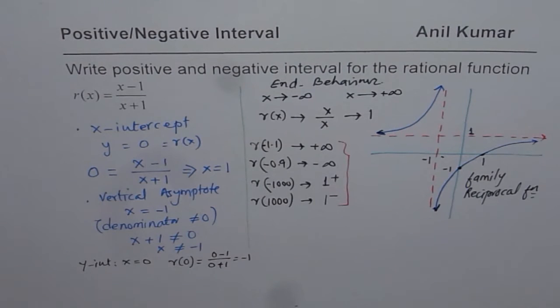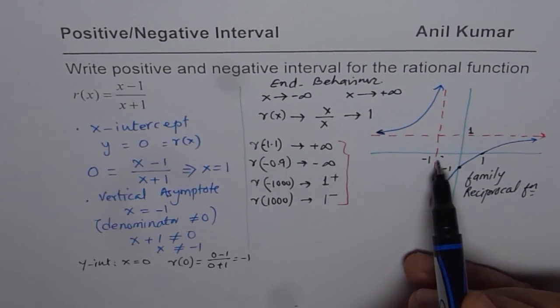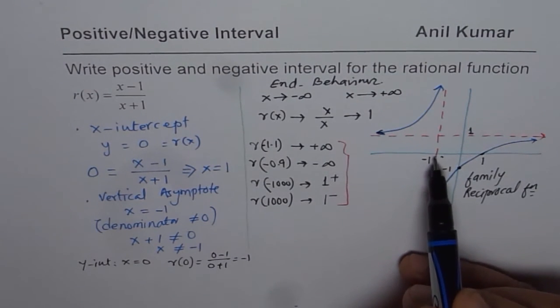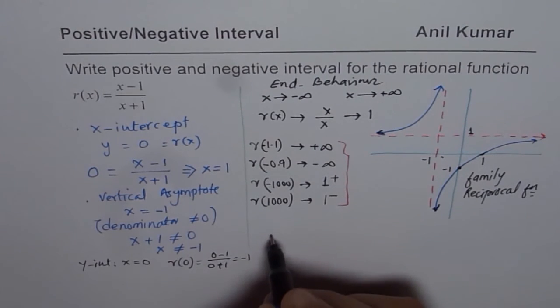So some of you can actually perform these calculations to sketch the graph correctly. Okay, anyway, now let us answer the question. So one of the important thing here is that the domain is all real numbers except minus 1. Therefore, do not include minus 1 in your answer.